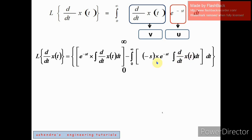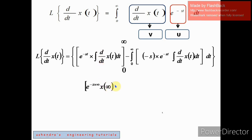Plugging in the upper limit infinity and lower limit zero — we plug in in place of t. For the upper limit: e^(-s times infinity) times x(infinity). This is because the integration and differentiation cancel, leaving x of the upper limit value. For the lower limit: minus e^(-s times 0) times x(0).